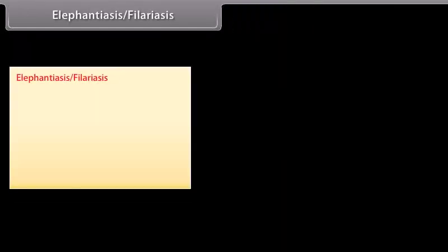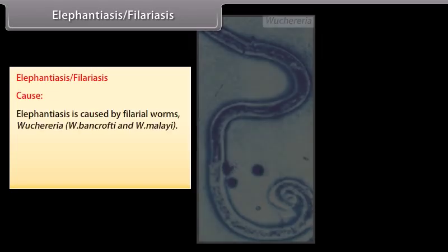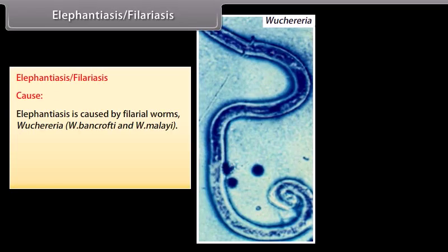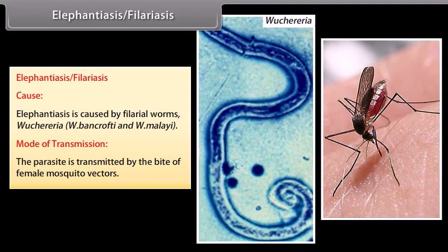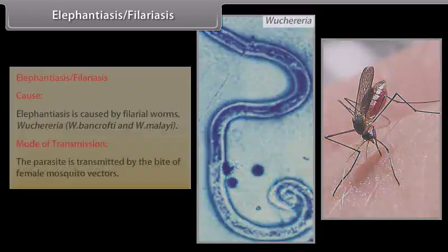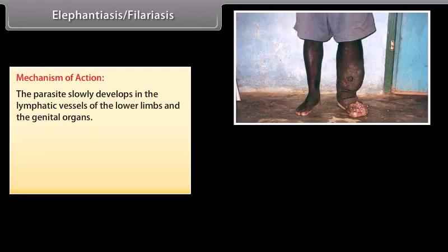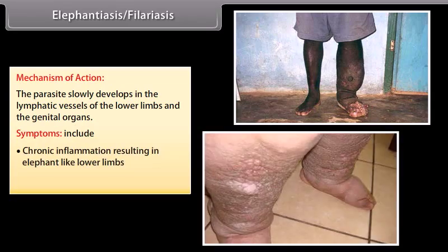Elephantiasis, or filariasis, is caused by filarial worms Wuchereria bancrofti and W. malayi. The parasite is transmitted by the bite of female mosquito vectors. The parasite slowly develops in the lymphatic vessels of the lower limbs and the genital organs. Symptoms include chronic inflammation resulting in elephant-like lower limbs and gross deformities of genital organs.